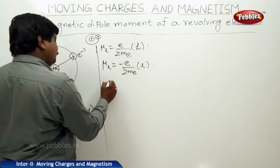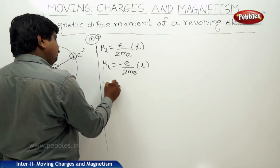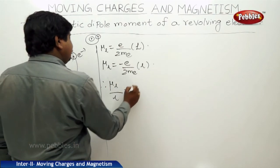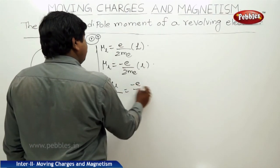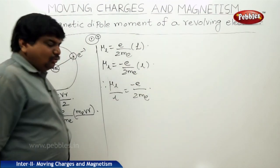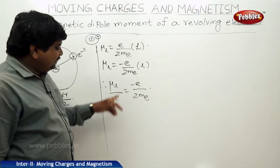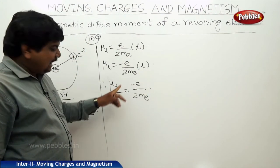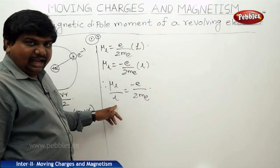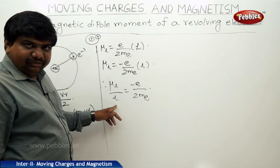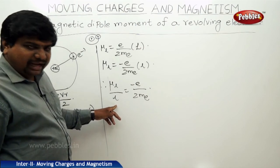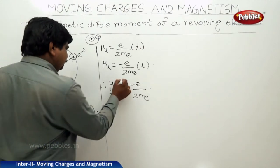Therefore mu_L divided by L is equal to minus E divided by 2Me. This ratio of magnetic momentum per angular momentum is called the gyromagnetic ratio.